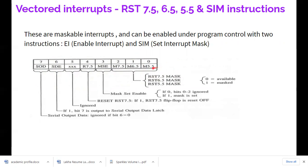Bits D0, D1, D2 correspond to M5.5, M6.5, and M7.5 respectively — the 'M' prefix indicates they are maskable. When you set a mask bit to zero, the interrupt is allowed to disturb the processor. When you set it to one, due to the AND gate with the inverted bubble, the output becomes zero and that interrupt vector will not be accessed — the interrupt is prevented.